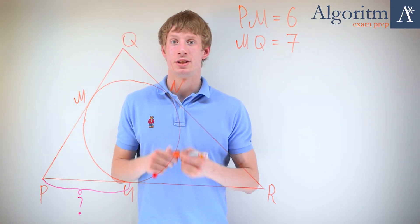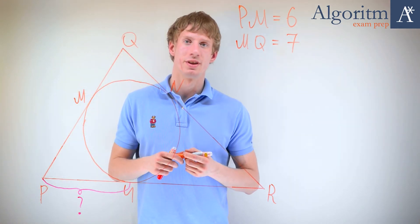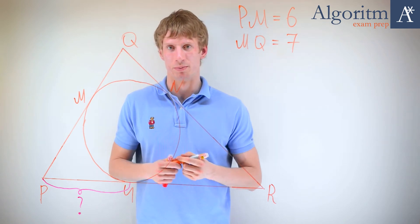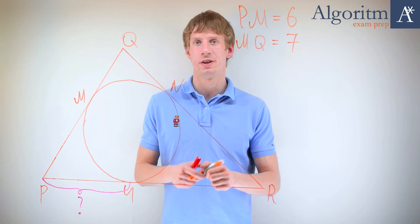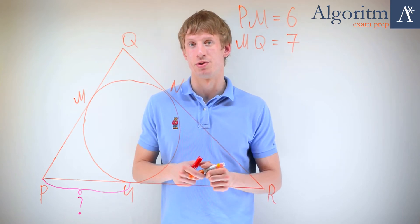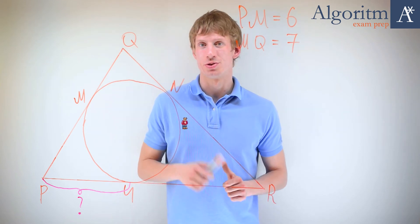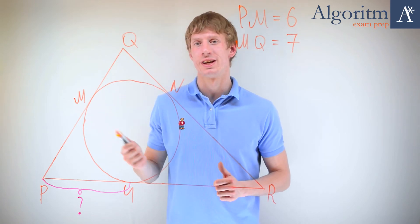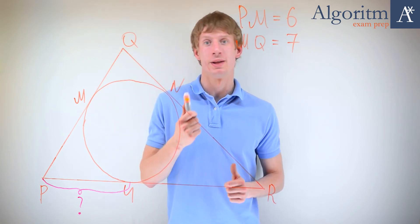Now let's formulate the theorems and definitions which may be used to solve this problem. Let's begin with the definition of the tangent to a circle. A tangent to a circle is a line in the plane of the circle that intersects the circle in exactly one point.